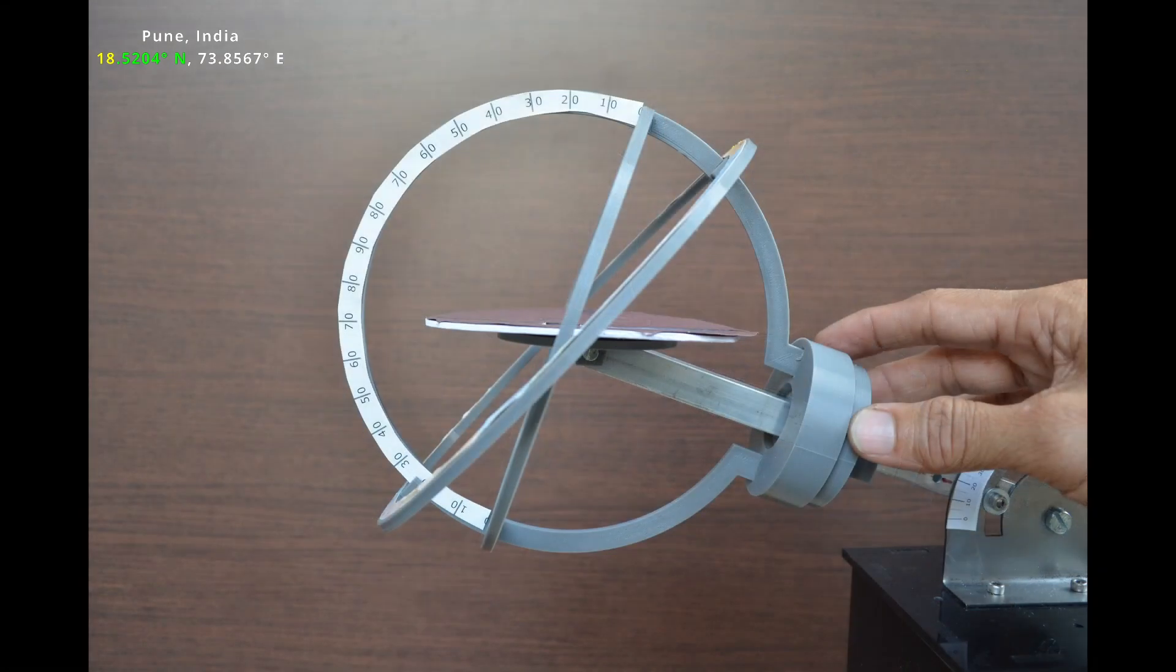North celestial pole has an altitude of 18 degrees. Celestial equator is 72 degrees above the horizon.